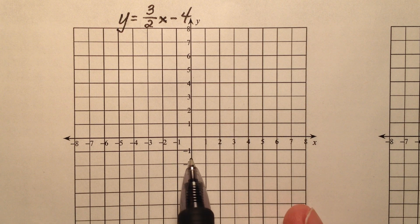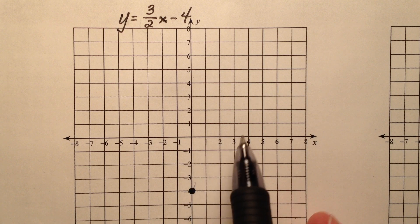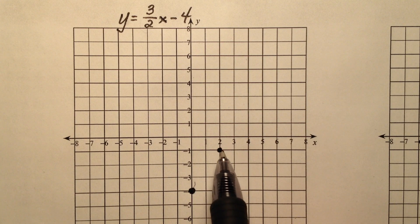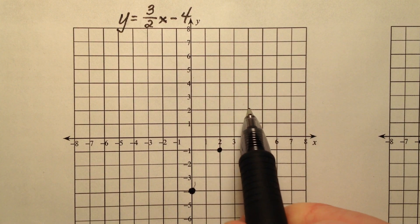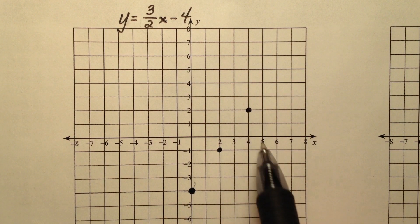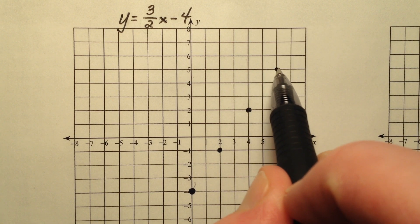So we're going to work our way up positive 3 and over positive 2. And we're going to continue that, up positive 3, over positive 2. And let's do one more, up 3 and over 2.